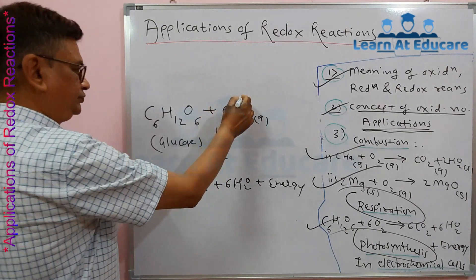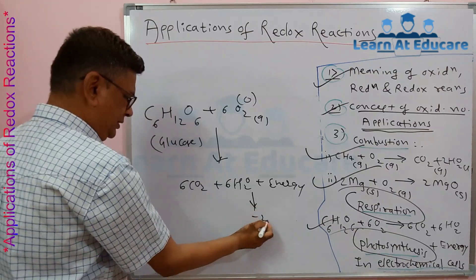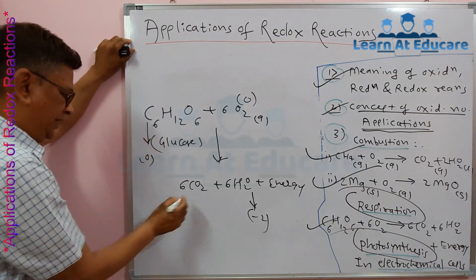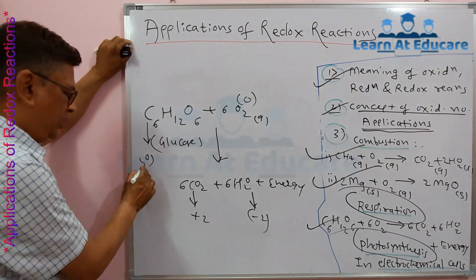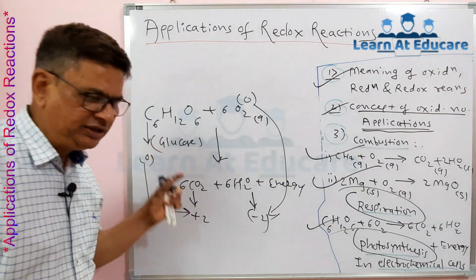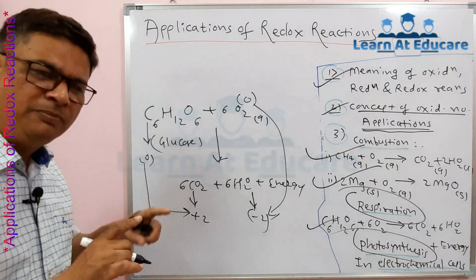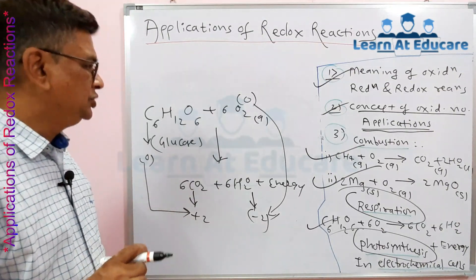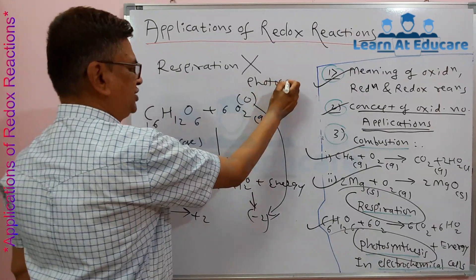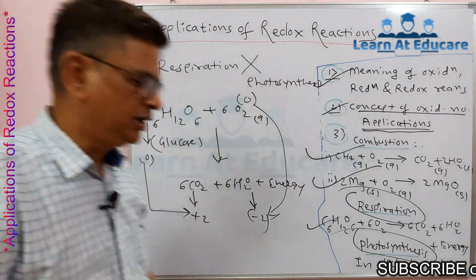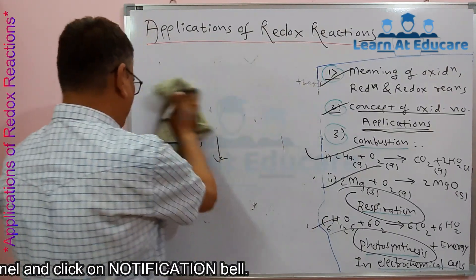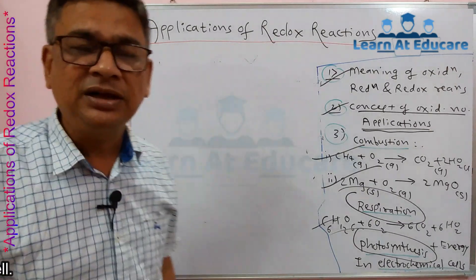In respiration, oxygen has oxidation number 0 as a reactant and −2 in products; carbon goes from 0 to +2. So oxidation number of carbon increases and that of oxygen decreases — this is a redox reaction. Respiration and photosynthesis are exactly opposite in manner, but both are redox reactions. In photosynthesis, CO2 (inorganic) is converted into glucose (organic).